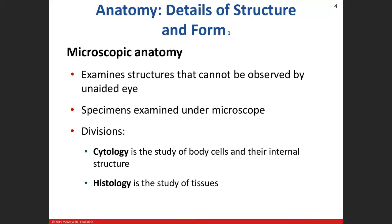Let's jump into anatomy and talk about the different types. We won't be dealing with microscopic anatomy in this class — we're not going to be using microscopes. Microscopic anatomy is the study of anatomy for things we can't see with the unaided eye; we need some help, so we use microscopes. There are different types, like light microscopes and high-powered transmission microscopes. There are two divisions to microscopic anatomy: one is called cytology and the other is histology.